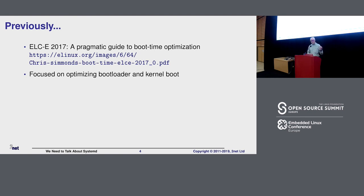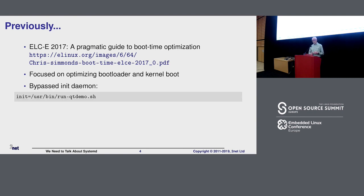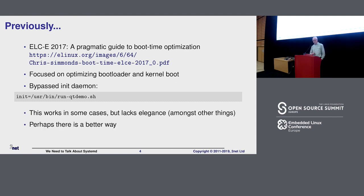It was mostly focused on the boot loader and the kernel parts. When it came to the user space part, I kind of bailed out and just put in an init equals whatever program I was running. So when I boot up, it just runs, in this case, QT demo. Which started really, really fast. That was a good solution, but it doesn't always work out because there may be some other dependencies. So in this talk, I really want to look at the things I was missing out in doing it that way.